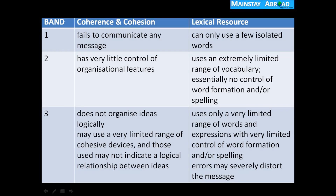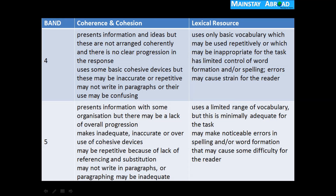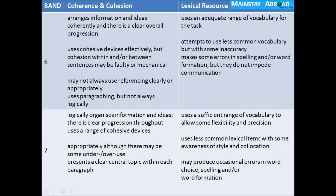Now let's focus on Coherence and Cohesion and Lexical Resource. This format helps you understand whether your writing falls under these parameters or whether you deserve band 3, 4, 5, or 6. You can pause and go through all descriptions. Bands 4 and 5 are described for Lexical Resource, and bands 6, 7, 8, and 9 are also covered — focus especially on bands 5 through 9.